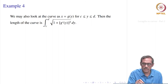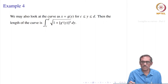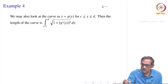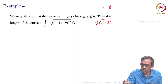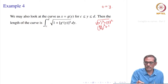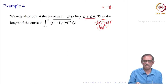What is given here is: instead of y as a function of x, we have x as a function of y. So we think of y as the parameter t, meaning t equals y. In that case, the formula uses the square root of x prime squared plus y prime squared, but since y is t itself, y prime becomes 1, and x prime becomes dx by dy. So the formula becomes the integral from c to d of the square root of 1 plus g prime y squared dy.